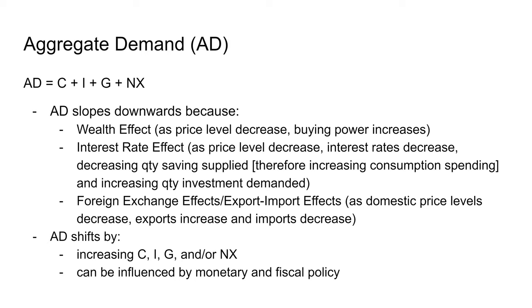Aggregate demand is the sum of consumption, investment, government spending, and net exports. Aggregate demand slopes downward because of the wealth effect — as price levels decrease, buying power increases so people buy more. The interest rate effect — as price levels decrease, interest rates decrease, so people consume more. And the foreign exchange effect — when domestic prices decrease, exports increase and imports decrease, boosting net exports. You can shift AD by changing any of its components or through monetary and fiscal policy.